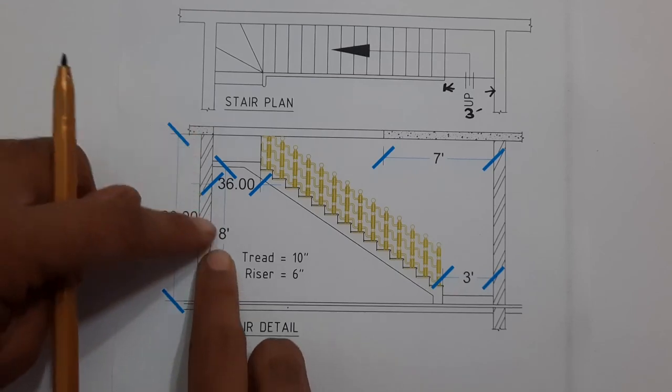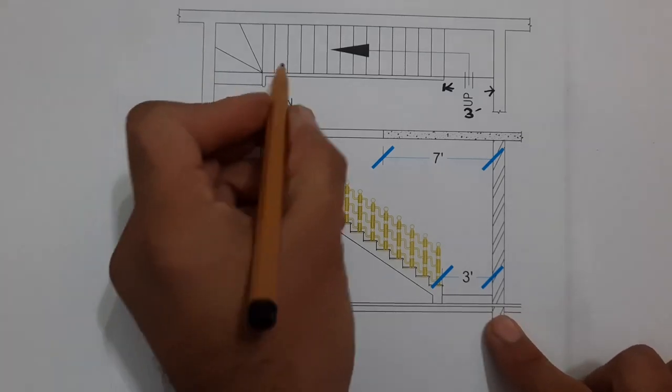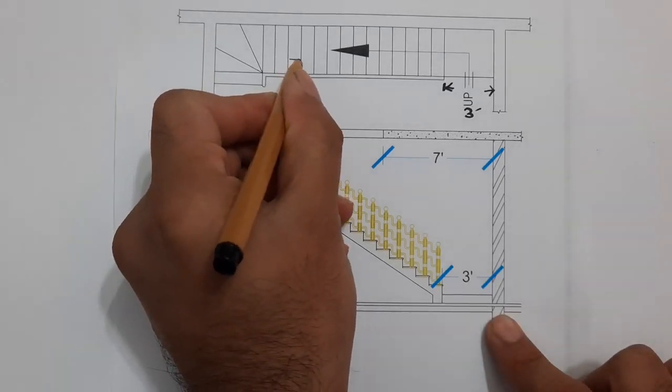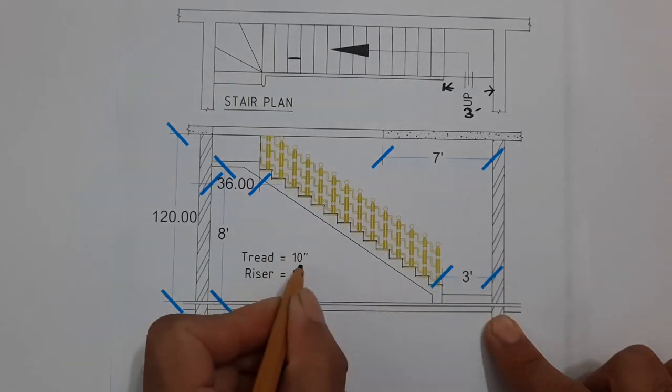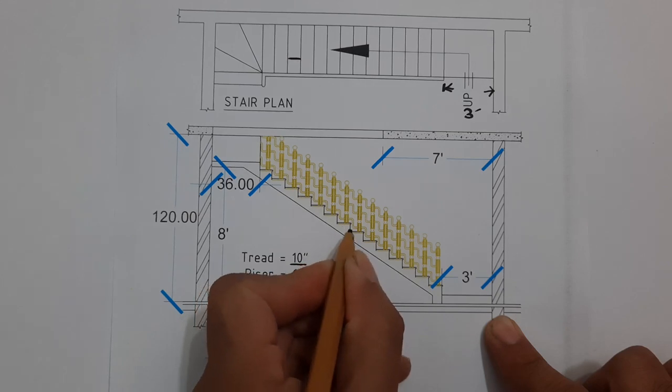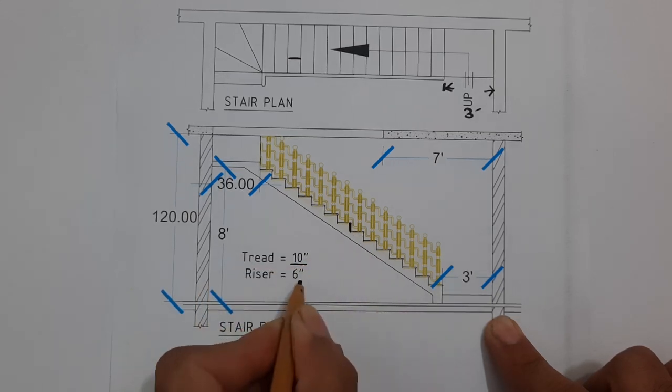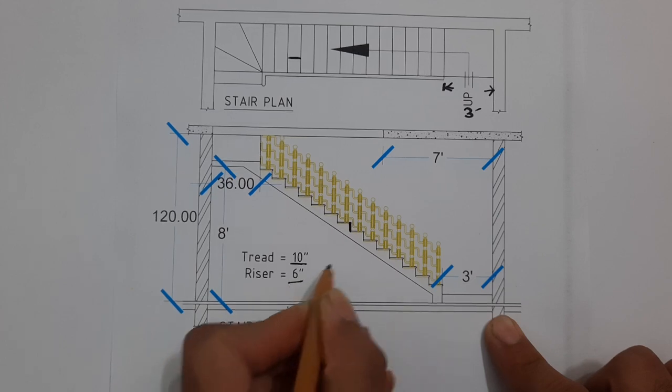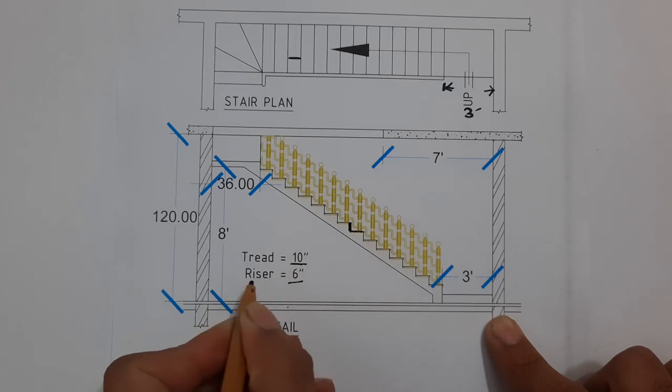You can see, to the height of 8 feet. So here you can see this is called tread, which is 10 inches. And this one is called riser, which is 6 inches. So the horizontal is tread and the vertical is riser. So tread is 10 inches, riser is 6 inches.